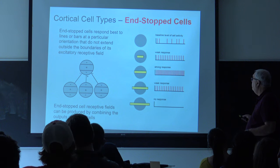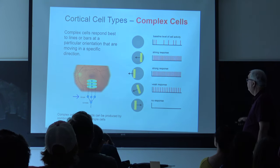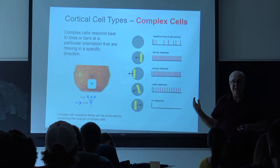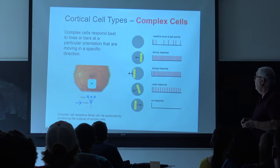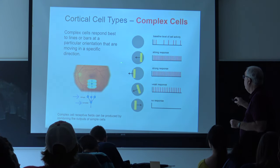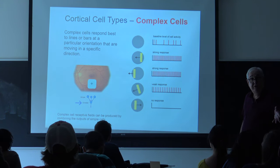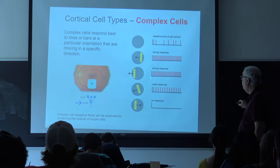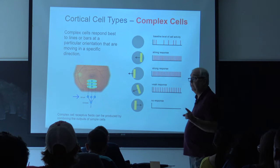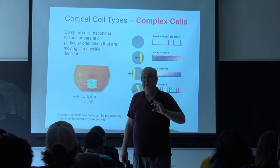There's another type of cell called a complex cell — this is the one Hubel described in the video. This cell wants a bar of a particular orientation moving perpendicular to its orientation in a particular direction. For example, a vertical bar moving from right to left gives a strong response throughout the visual field. Change the orientation and the response drops off; change the direction of motion from right-to-left to left-to-right and you get no response. Whereas simple cells were sensitive to bar width and orientation, complex cells are sensitive to orientation and direction of motion.